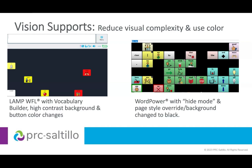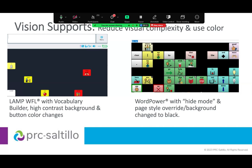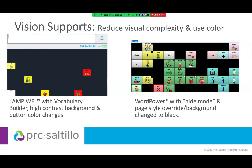One way to help friends with vision needs is to reduce visual complexity and use color strategically. People who have cerebral or cortical visual impairments, or CVI, often seek preferred colors — which vary person to person, but a large number prefer yellow and red. Using those colors to change either the button background or outline color is nice for drawing visual attention to words you want to highlight. WordPower, LAMP Words for Life, and Unity language systems all have ways to hide and show buttons, so you can selectively focus on certain vocabulary or gradually reveal more over time.